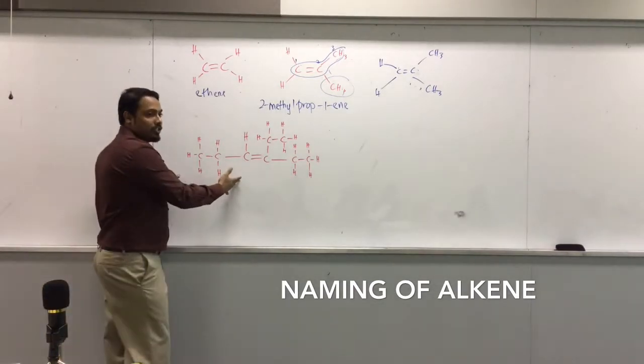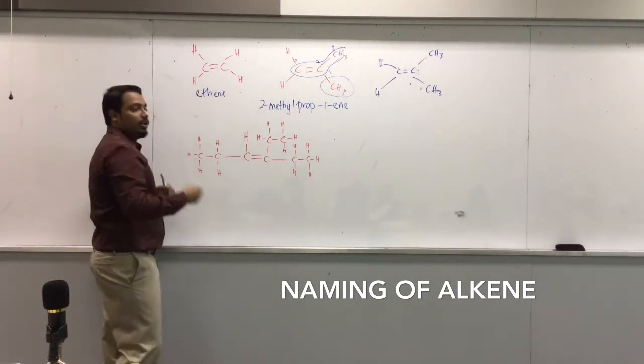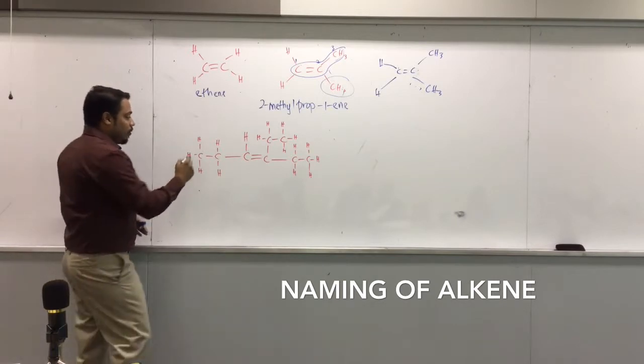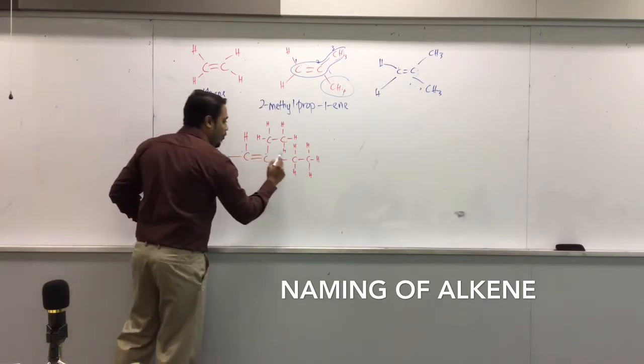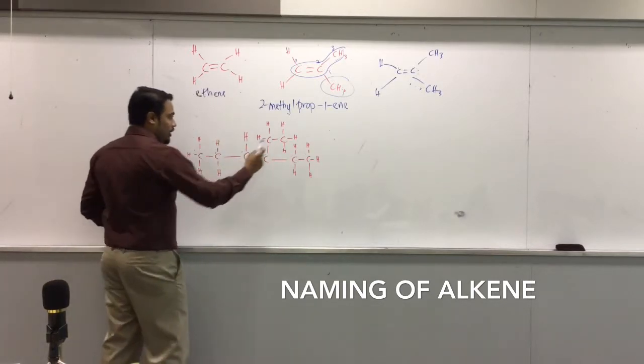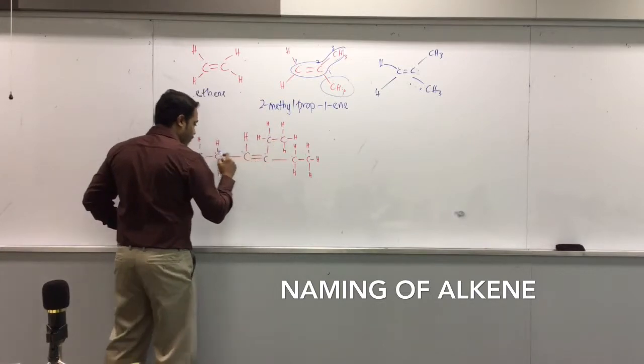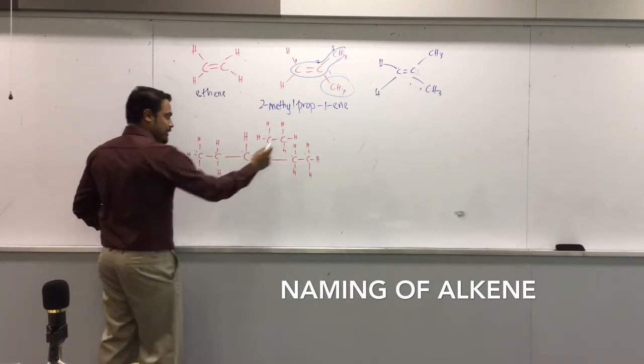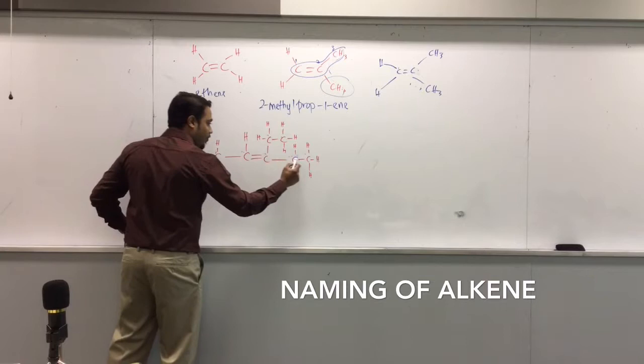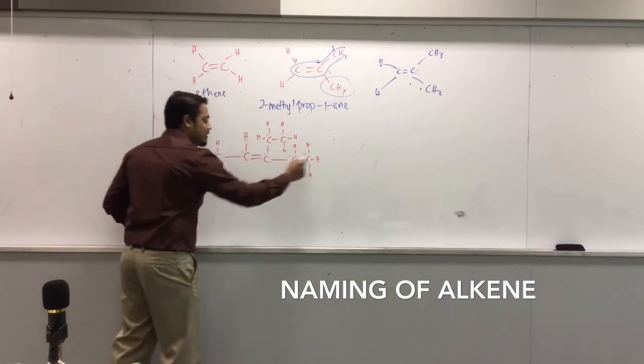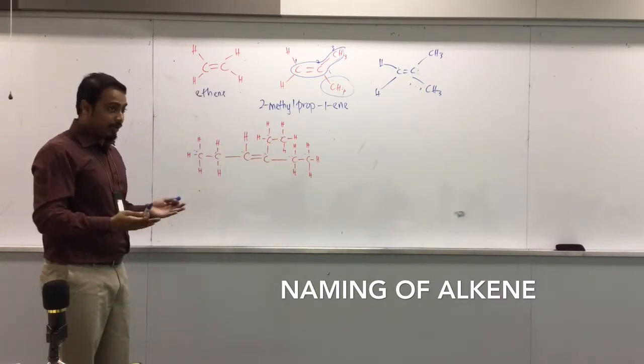Same goes to this. So again, longest chain. Let's count. One, two, three, four, five, six. Or one, two, three, four, five, six. Can I do this? One, two, three, four, five. No. The moment I do this, I'm away from the double bond. It doesn't make sense. Cannot do that.